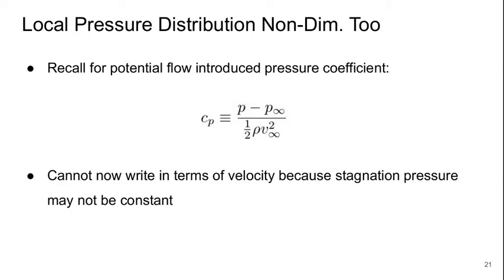The local pressure distribution throughout the entire flow field can also be non-dimensionalized. When we were talking about potential flow, we introduced the pressure coefficient, Cp, which is p minus p infinity over that reference dynamic pressure. Now, we can't write this in terms of just velocities anymore, because in general, in a viscous flow, our total or stagnation pressure is not constant everywhere anymore. But we can always use this definition of pressure coefficient that is actually based on the pressure fields.